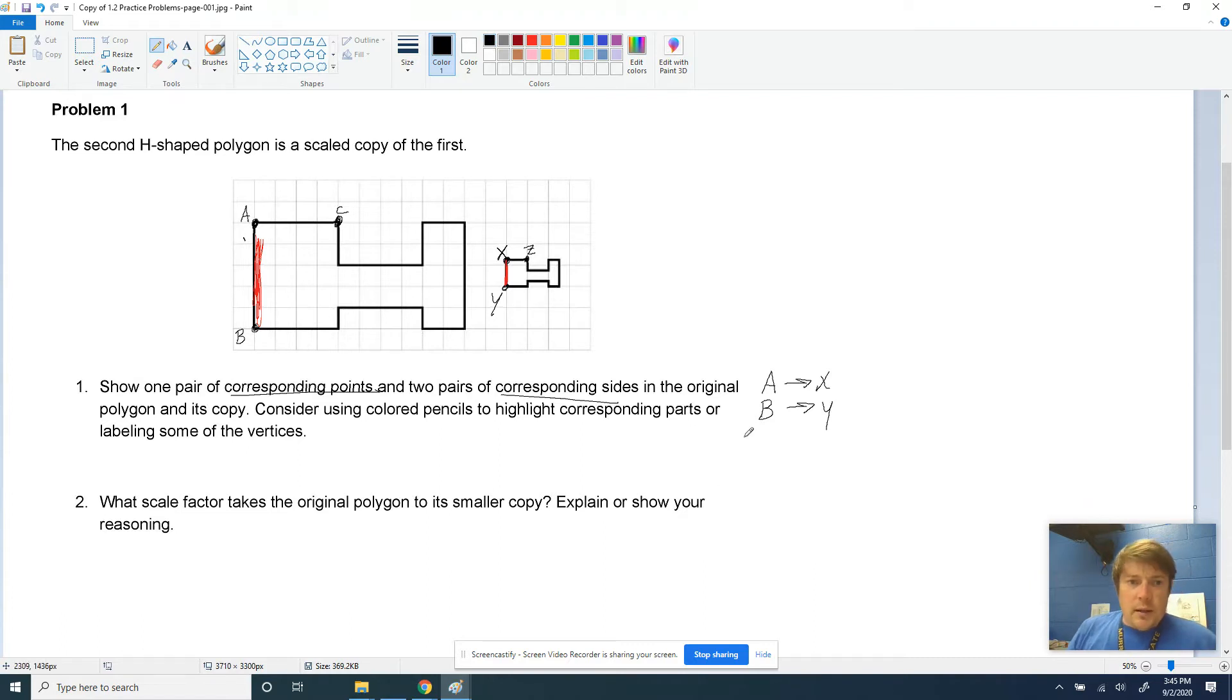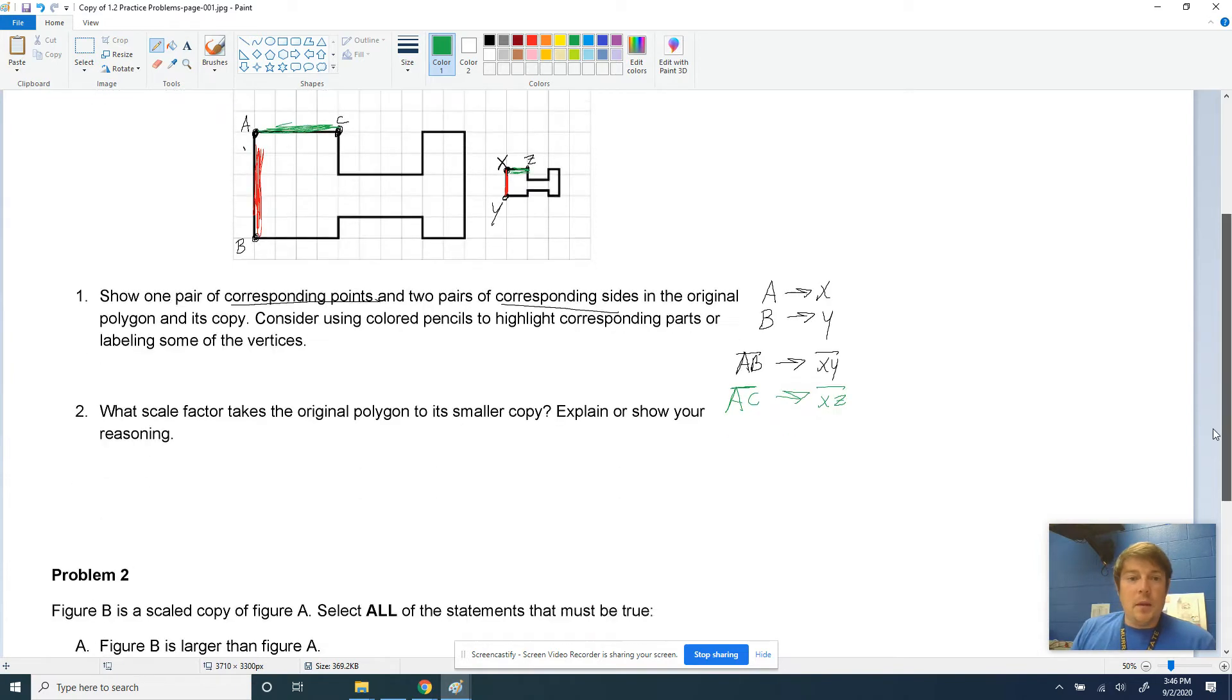So my red one that I'm going to highlight here corresponds with this red one right here because they're in the same location. And so what I'm going to write is that line segment AB corresponds with line segment XY because they're in the same location. And then I'll do that one more time with AC, which is on top, and XZ because they're in the same location. They correspond with one another. They are corresponding parts. You don't have to use a highlighter or a colored pencil. You could label things like this after you make dots. So we just want to make sure that you understand what corresponding parts are.